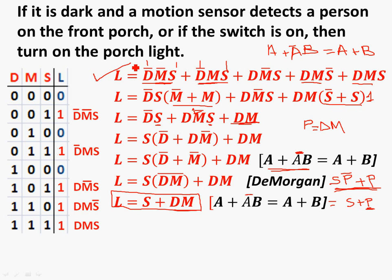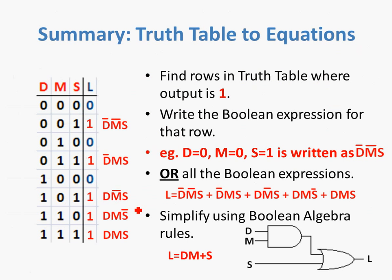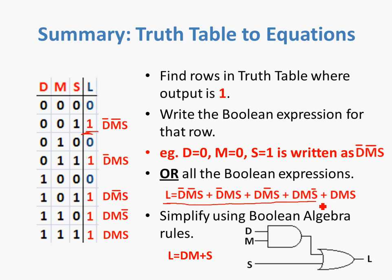So instead of drawing a circuit with the full unsimplified expression, we can draw a circuit with this much simpler version. In summary: create a truth table, find the rows where the output is 1, and write the Boolean expression for each such row — for instance, if D=0, M=0, S=1, write not-D AND not-M AND S. OR all those individual Boolean expressions together to get the full expression for the light. Then, using rules of Boolean algebra, simplify it. Once you have the simplified expression, you can create the circuit.